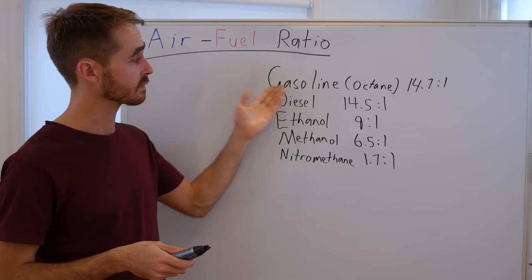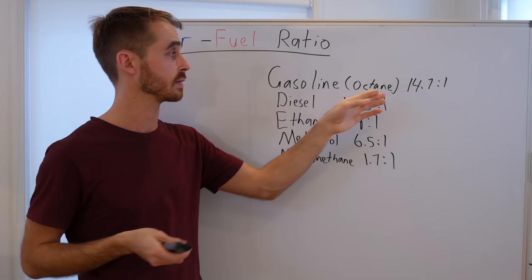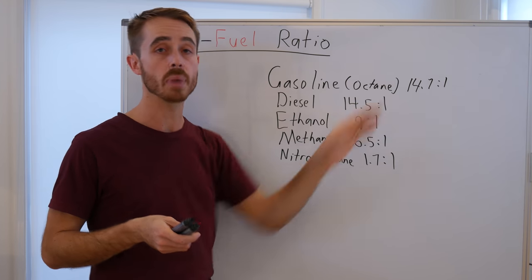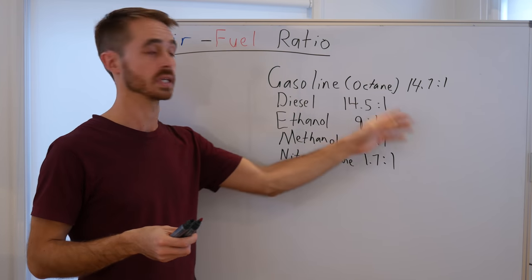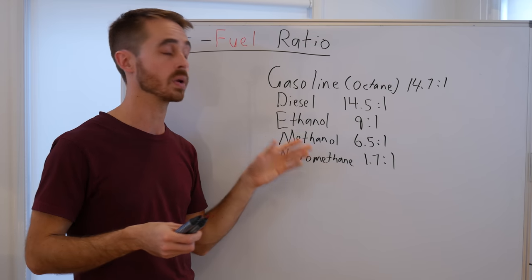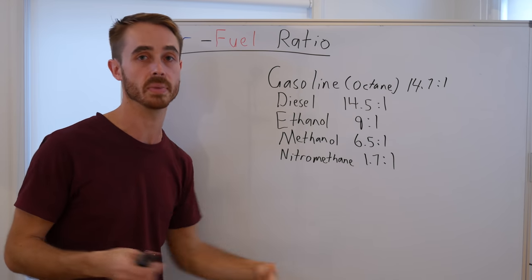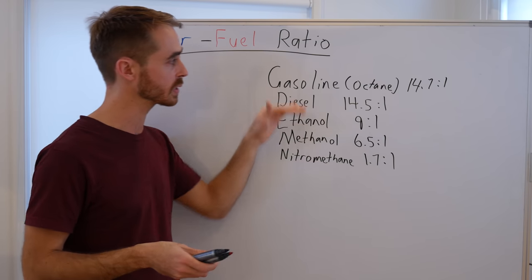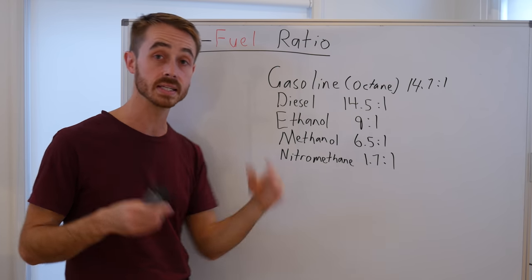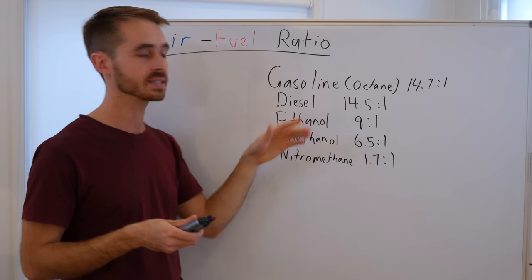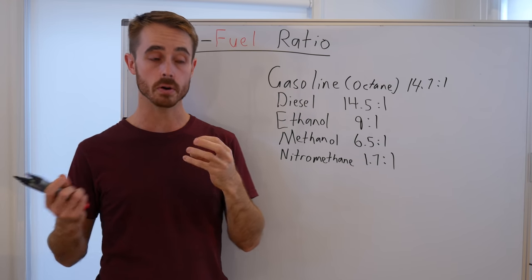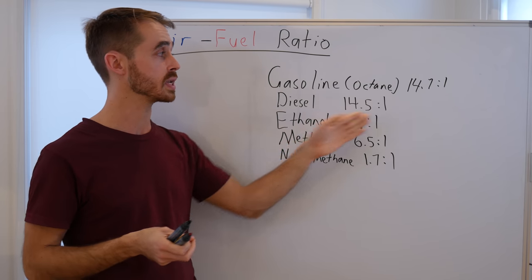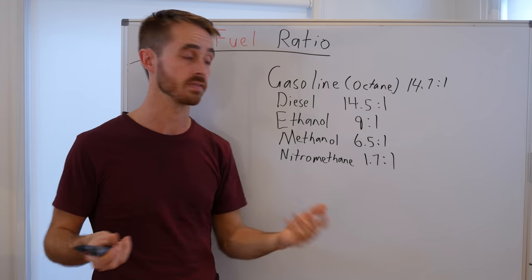For example, we have gasoline or pure octane, which needs 14.7 parts of air for every one part of fuel you burn. For diesel it's 14.5 to 1, ethanol 9 to 1, methanol 6.5 to 1, and nitromethane used on top fuel dragsters is 1.7 to 1. We can see quite different ratios depending on the fuel. With things like ethanol, they have encapsulated oxygen within their molecules, which means they don't need as much air to burn a given amount of fuel.